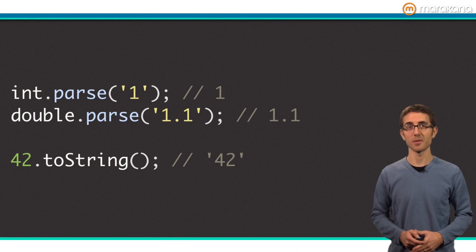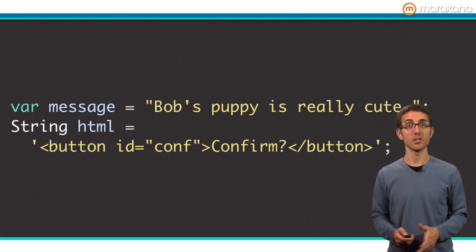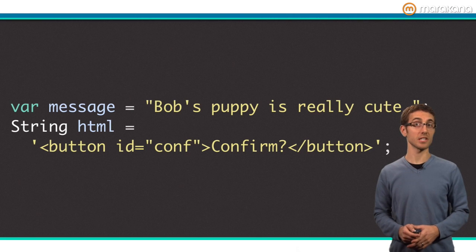Speaking of strings, let's move on to our next built-in type. Strings in Dart are sequences of UTF-16 code units. Notice how you can use either single quotes or double quotes when declaring a string literal.